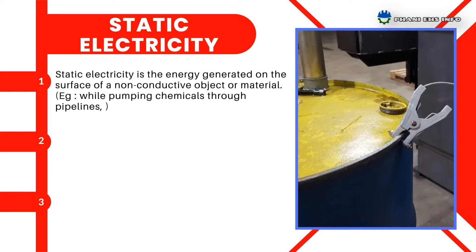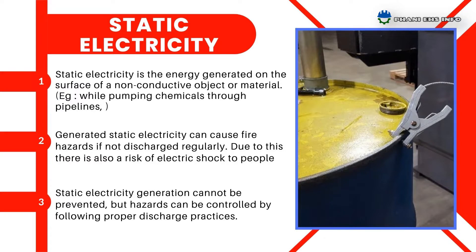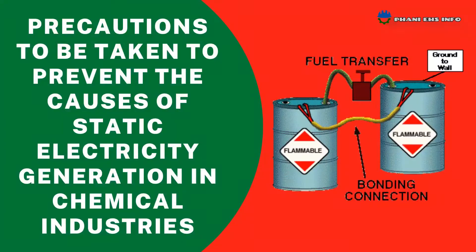For example, while pumping chemicals through pipelines, charging powder materials from poly bags or holding them into bags, and during human movement. Generated static electricity can cause fire hazards if not discharged regularly. Due to this, there is also a risk of electric shock to people. Static electricity generation cannot be prevented, but hazards can be controlled by following proper discharge practices.